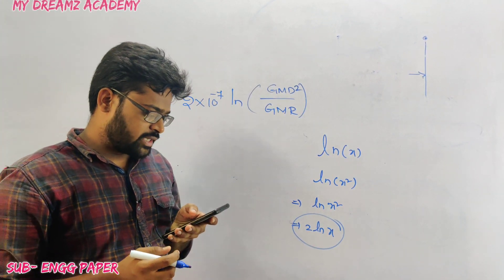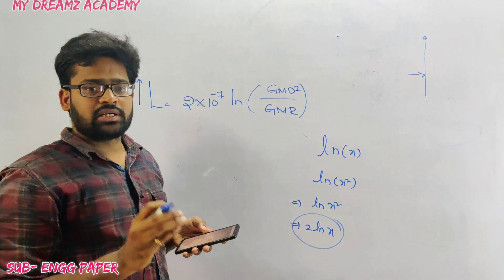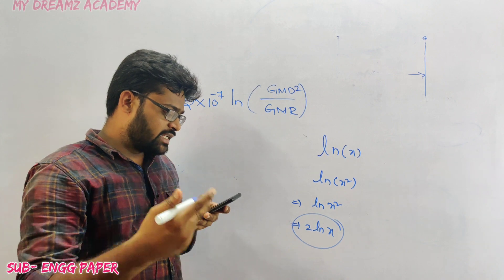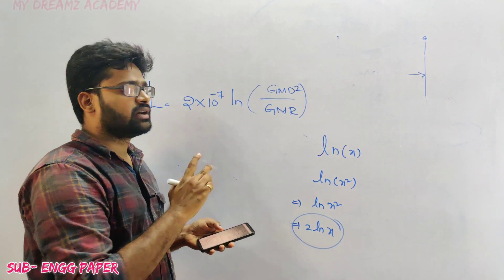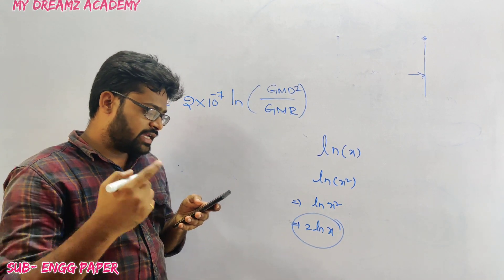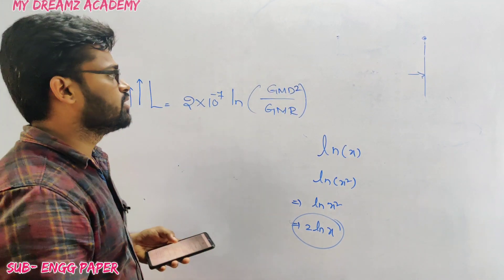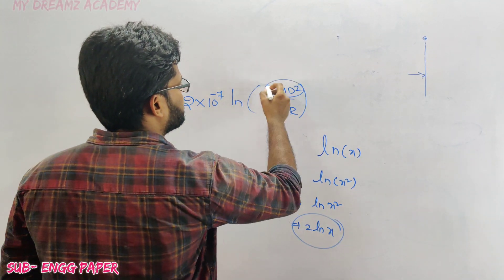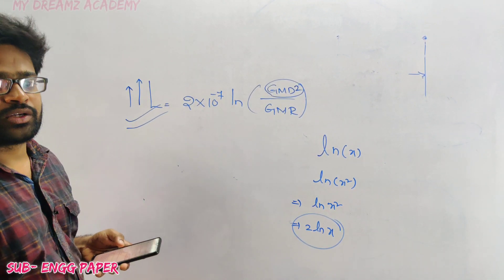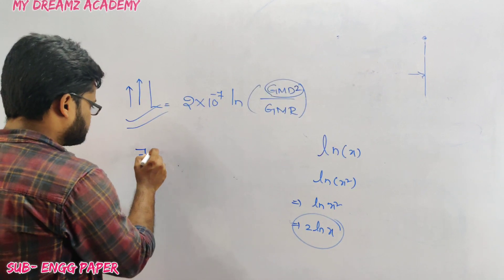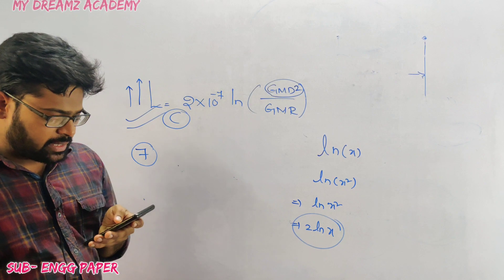When GMD is doubled, inductor value does not double. When wire spacing is increased 4 times, inductance does not simply double either. But if the distance is the square of the original distance, then the inductance value will be doubled. Option C is correct.